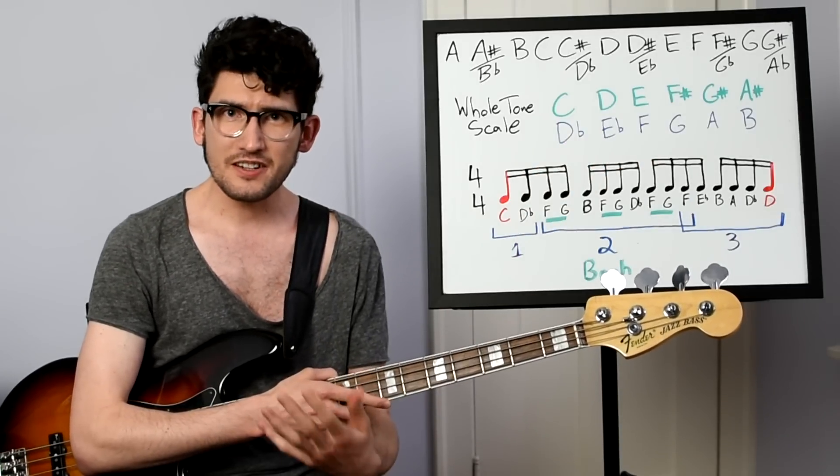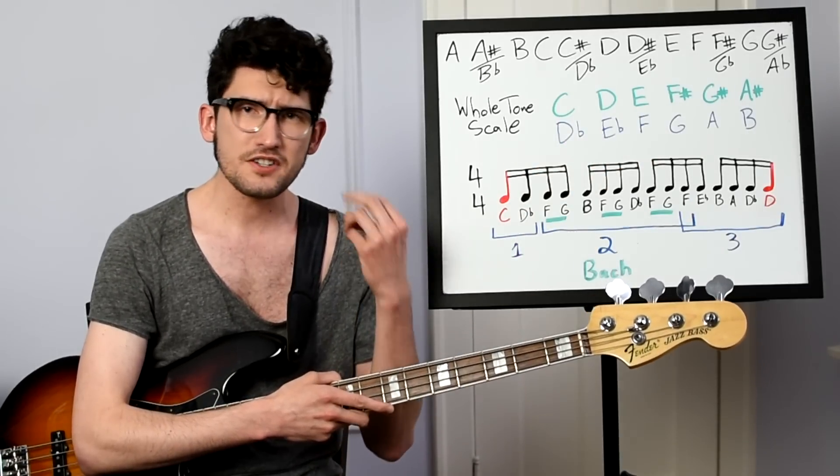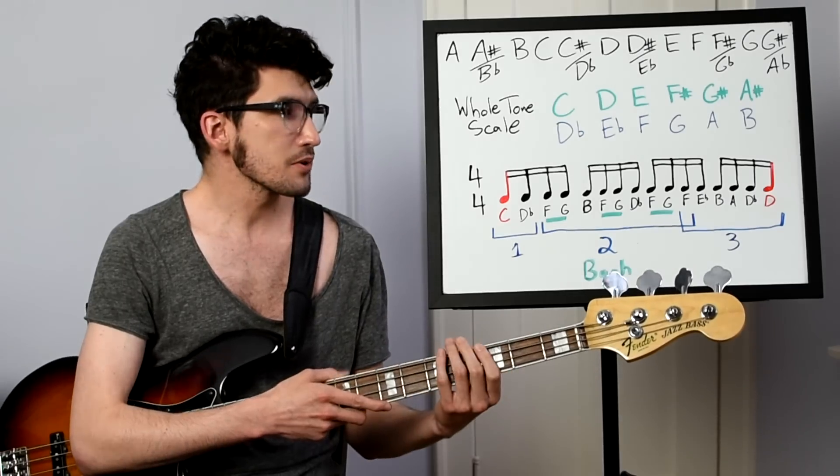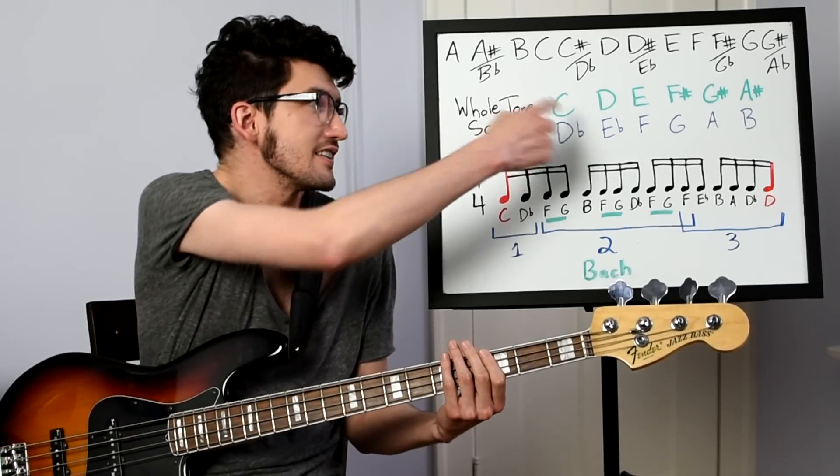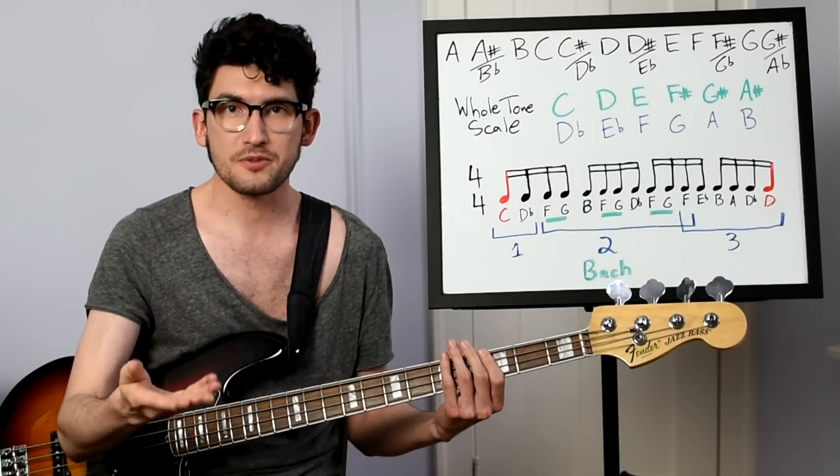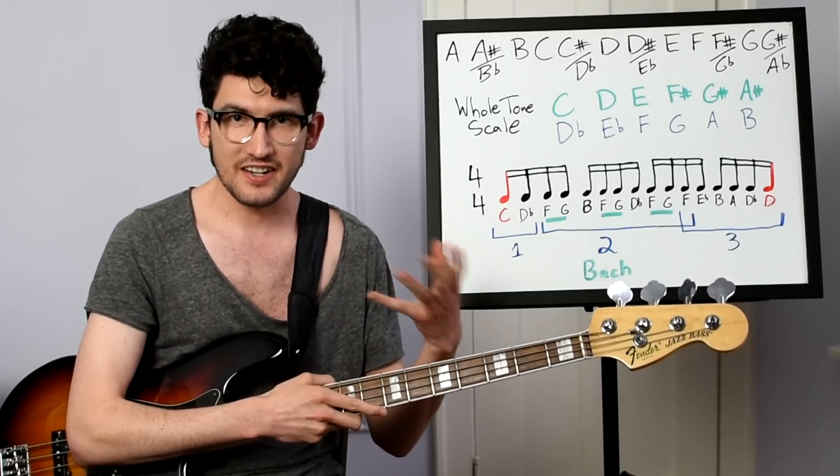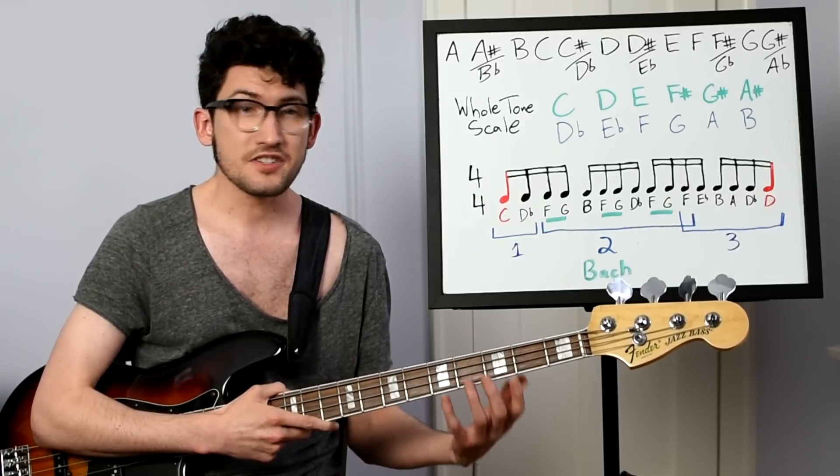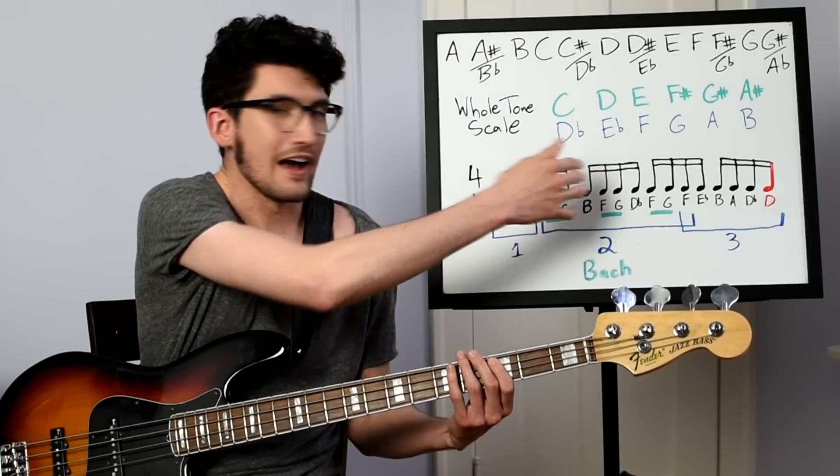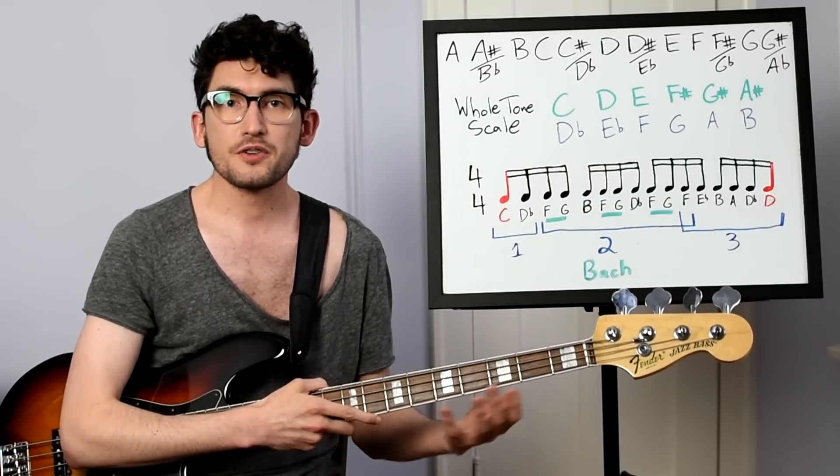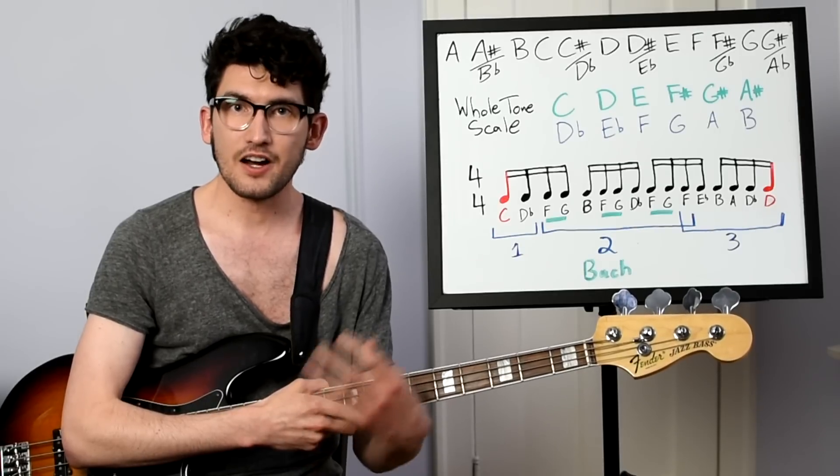The interesting thing to point out here is that there are only two whole tone scales. Because if we were to start from, say, C, D, E, F sharp, or any of those notes from that whole tone scale, we would wind up with the same six notes. Same thing if we start from D-flat, E-flat, F, G, A, or B. We're going to wind up with the same set of six notes.